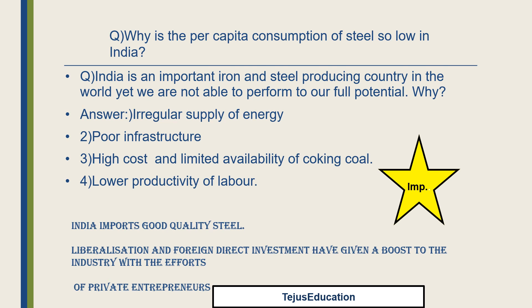A few important terms: Pig iron is the solid form of hot metal obtained from iron ore or scrap recycling; it is used as raw material for iron and steel making and most is imported. Cast iron is iron that has been melted, poured into a mold, and allowed to cool. Wrought iron (W-R-O-U-G-H-T) is iron that has been heated and then worked with tools.